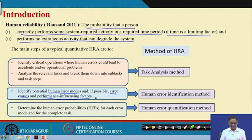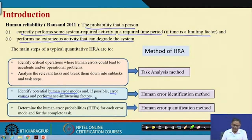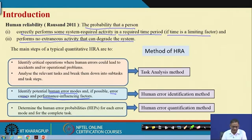This is very important because the same person given different situations where the performance shaping factors differ will have different human reliability — meaning the error probability will be different. Then you are also required to quantify the probability of human error. You identify the human error modes and then find out the probability of human error on that mode, which is known as human error probabilities.